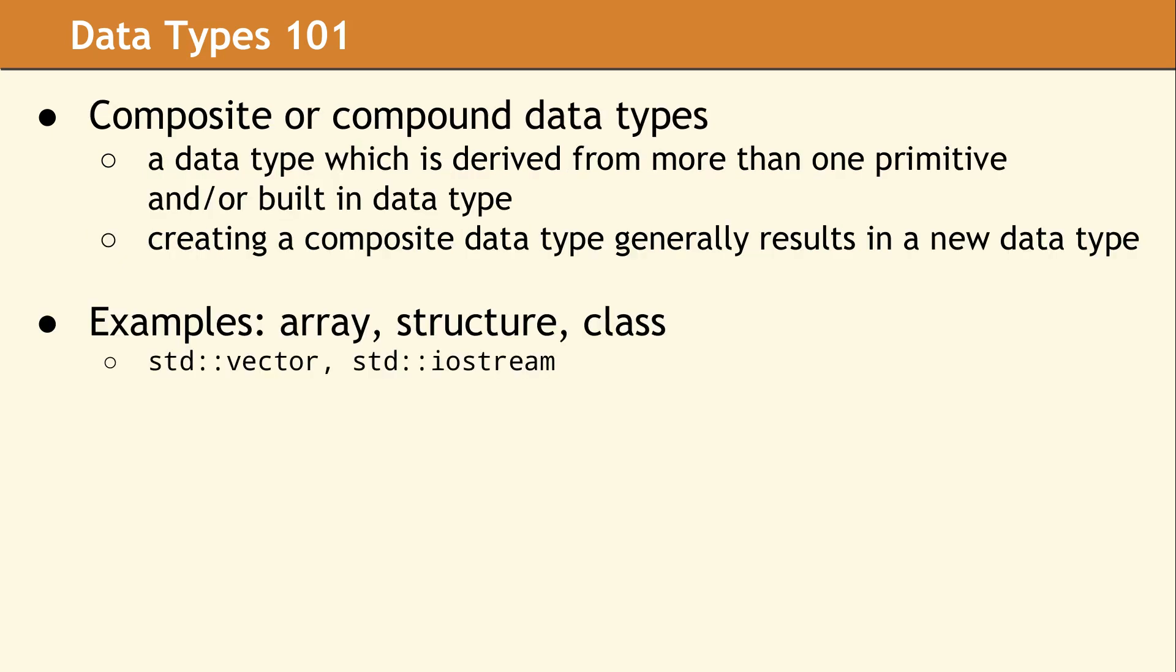Composite or compound data types are data types that are built on other data types. An example of a composite would be an array or a structure. STD vector is a classic example of a composite data type.